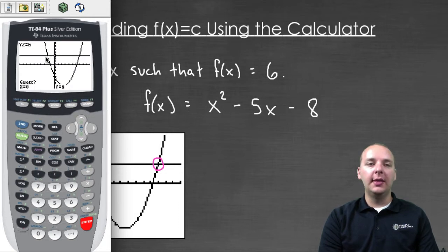And the reason it needs a guess is it's only going to give you one at a time. It wants to know, do you want this one or this one? So let's just scroll a little bit to the left. And then we'll push enter. And then it will tell us the intersection happens at negative two comma six.